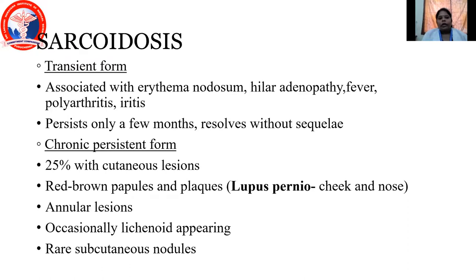We will now detail each type of granuloma. The first is non-necrotizing granulomas, under which we have sarcoidosis. There are two forms of sarcoidosis: transient form and chronic persistent form. The transient form is associated with erythema nodosum, hilar adenopathy, fever, polyarthritis, and uveitis, and it persists only for a few months and resolves without sequelae.